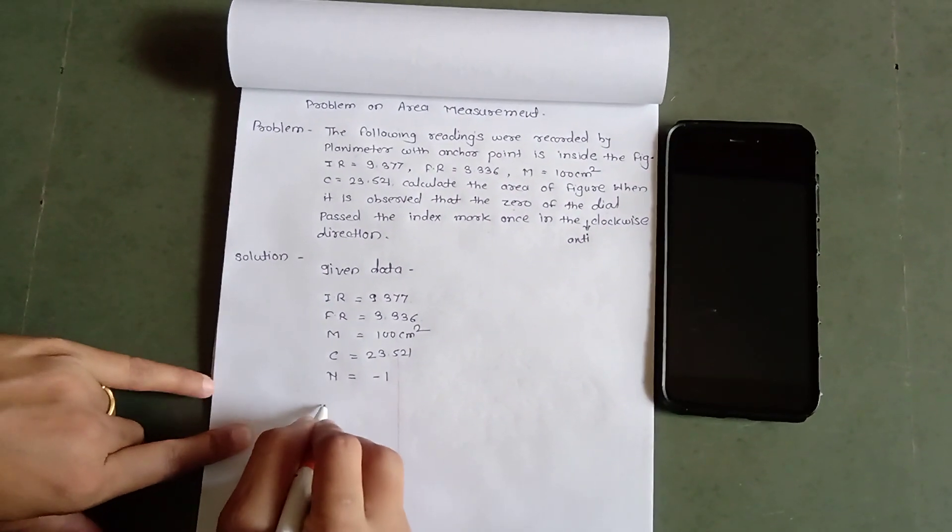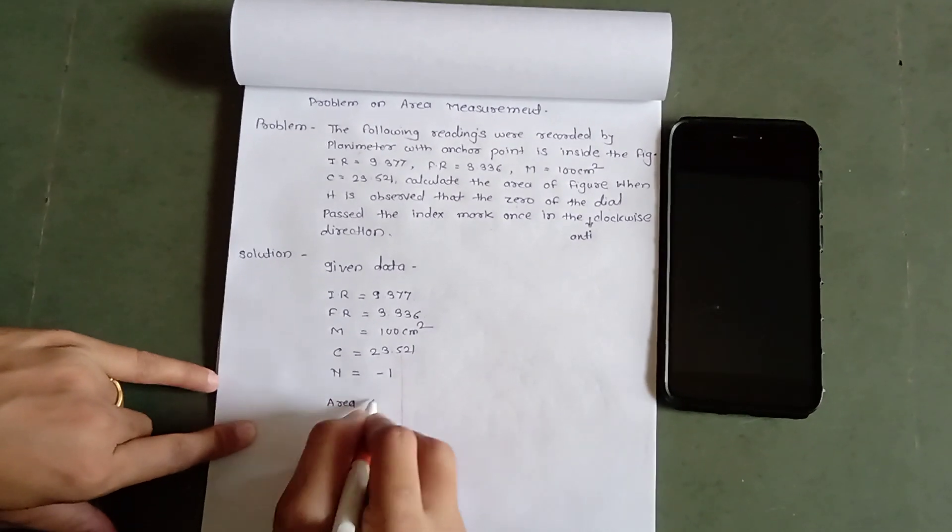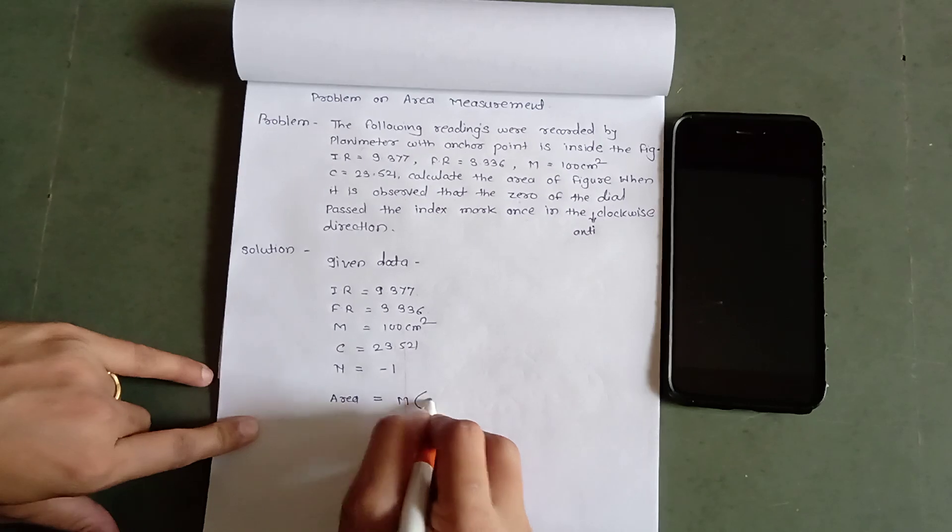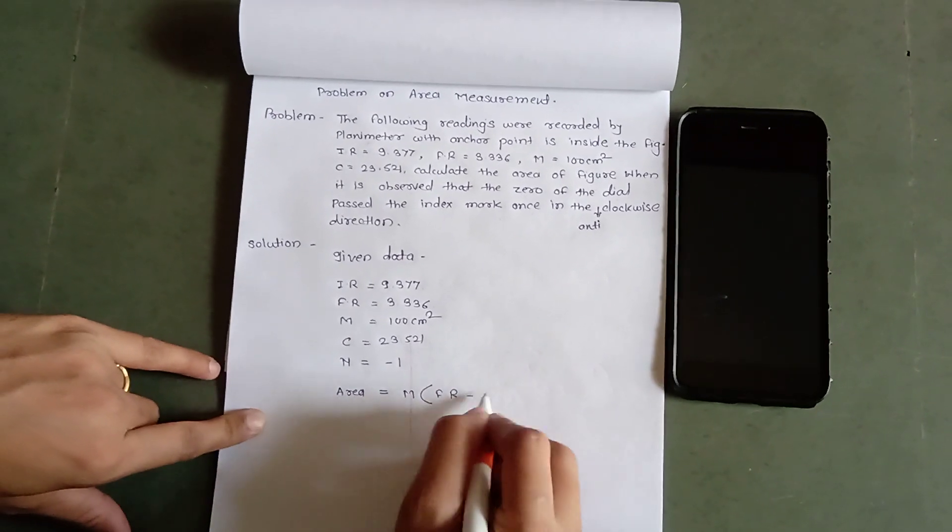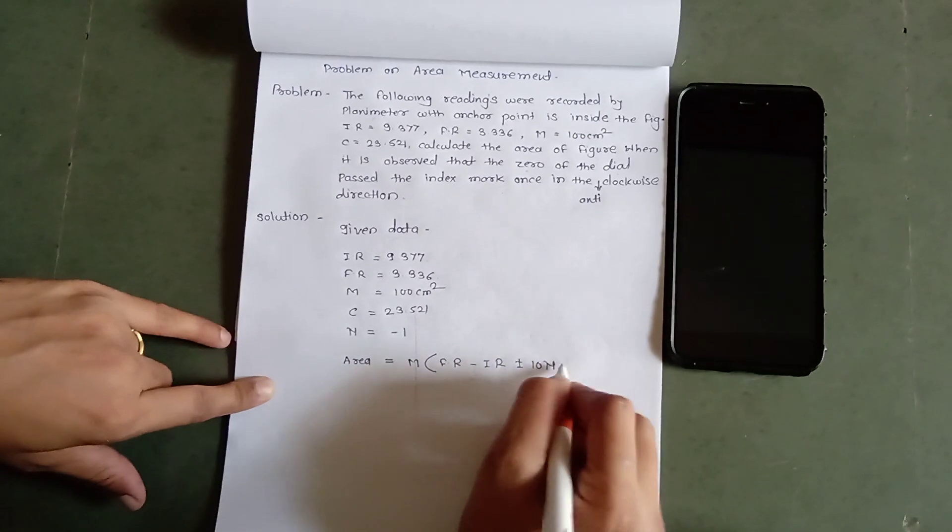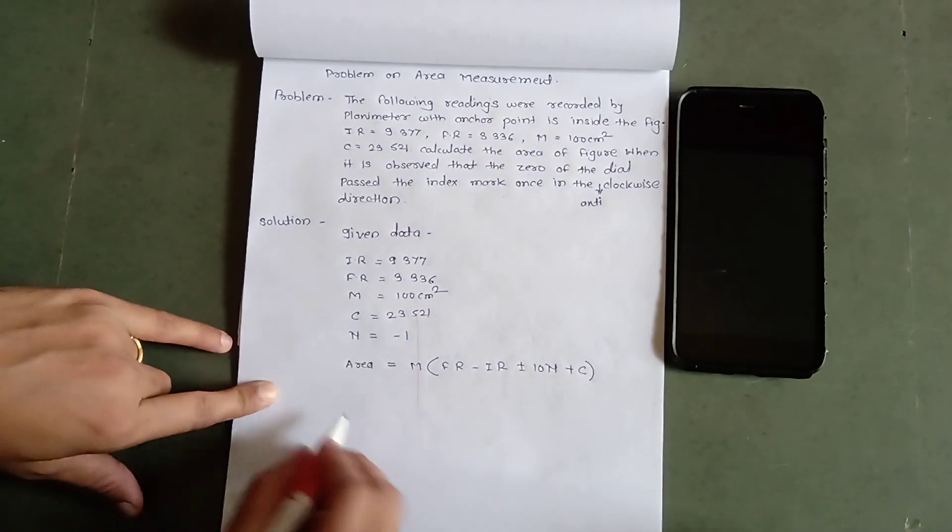Now, from the expression, area equals M into bracket FR minus IR plus or minus 10N plus C.